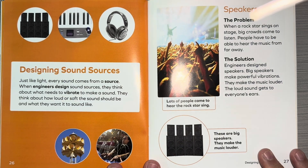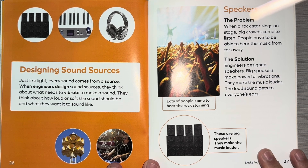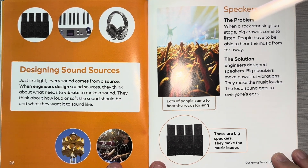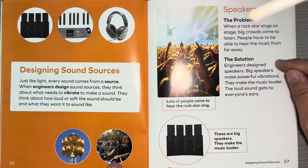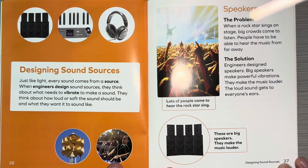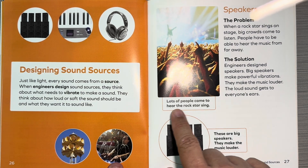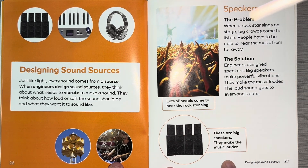Designing sound sources. Just like light, every sound comes from a source. When engineers design sound sources, they think about what needs to vibrate to make a sound. They think about how loud or soft the sound should be, and what they want it to sound like. Speakers. The problem: when a rock star sings on stage, big crowds come to listen. People have to be able to hear the music from far away. The solution: engineers design speakers. Big speakers make powerful vibrations — they make the music louder, and the loud sound gets to everyone's ears. These are big speakers and they make the music louder.